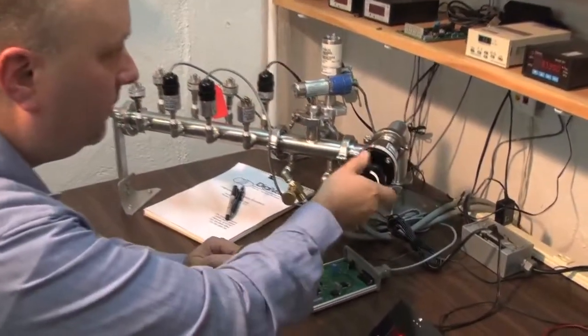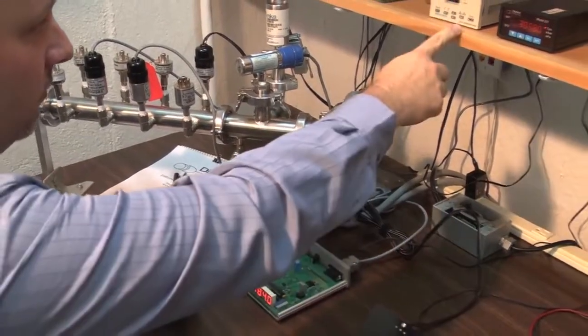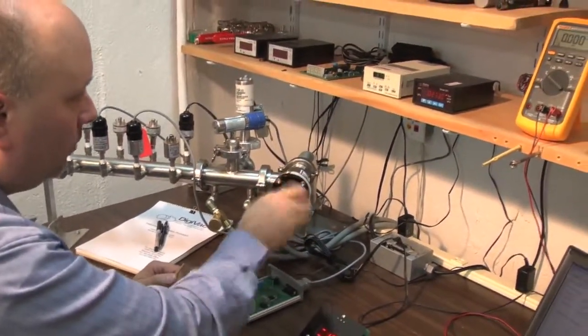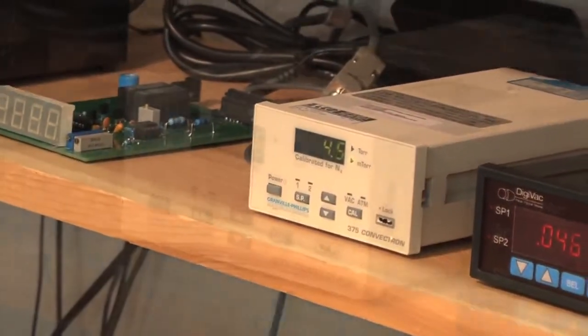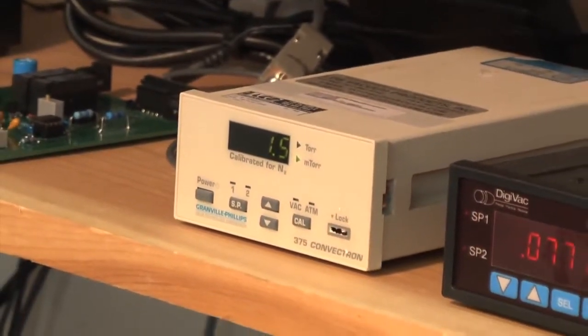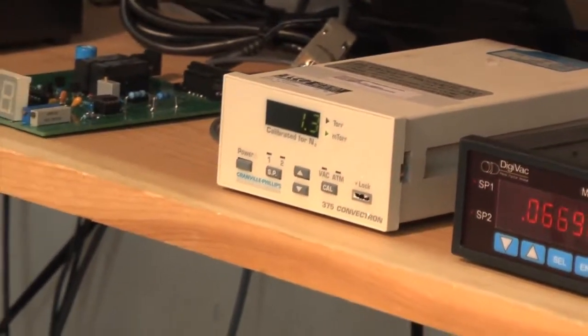Stop our roughing pump. Open our diffusion pump. Watching our 375 convectron, we would like to see the pressure reach 1 mil torr or lower. Pressure is approaching 1 mil torr. We're currently at 1.4, 1.3.